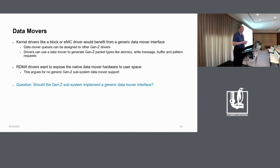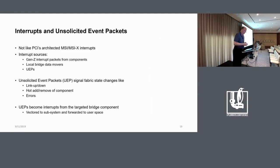And that would also be useful in being able to generate packet types in Gen Z that are hard to do with load store like Atomics or the right message or some of the other more exotic ones like buffer and pattern requests. On the other hand, RDMA drivers, which in the end want to expose the queues and the data mover hardware directly to user space, users are gonna have to have user space drivers that hide the differences between those queue mechanisms. And so they are not particularly interested in having a common data mover interface. So question to the community again is do we think we should work on that or not?